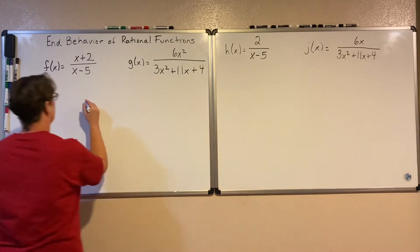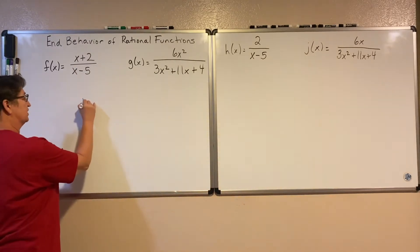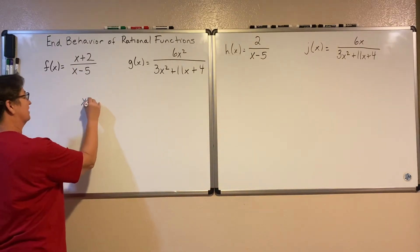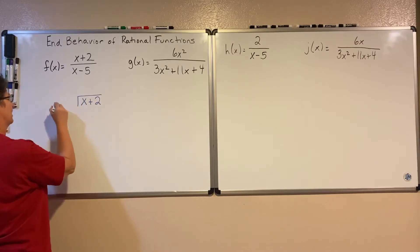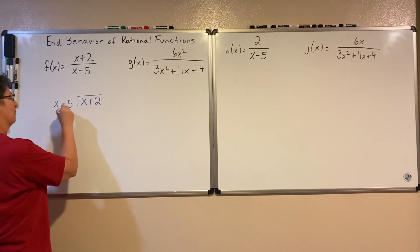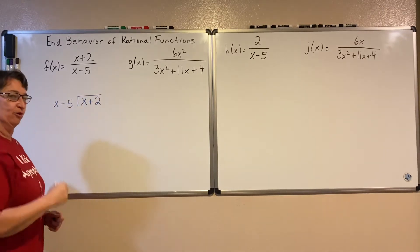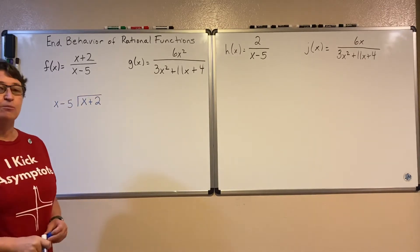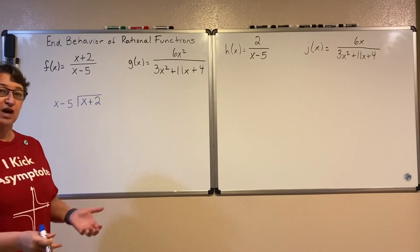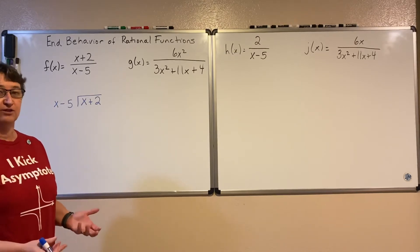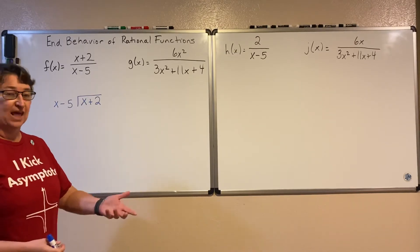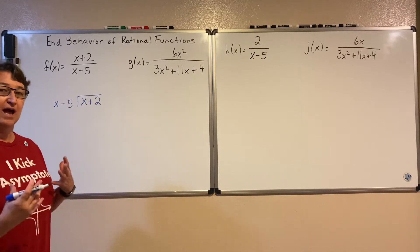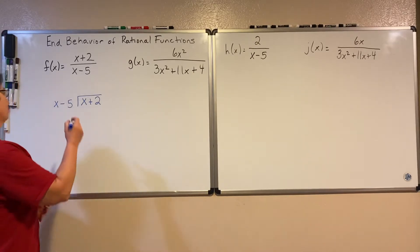Whatever my quotient is, minus the remainder, will tell me about what's happening on my end behavior. It'll help me to find a horizontal — in this video — or a slant — in the next video — asymptote.